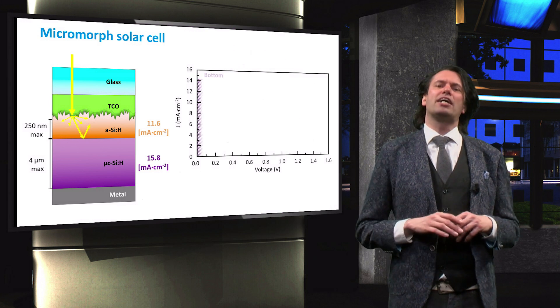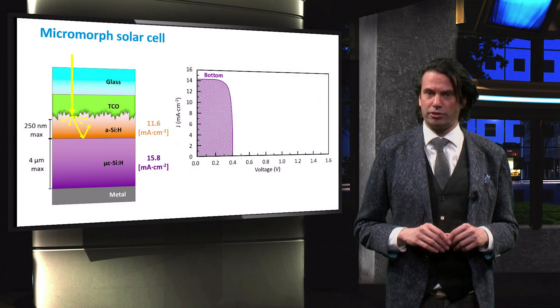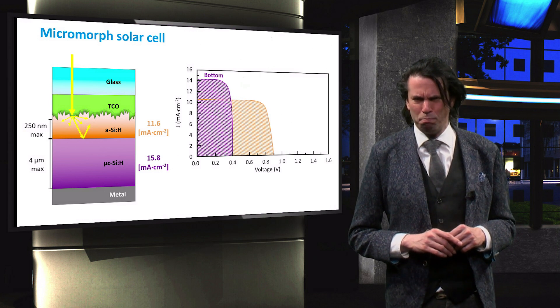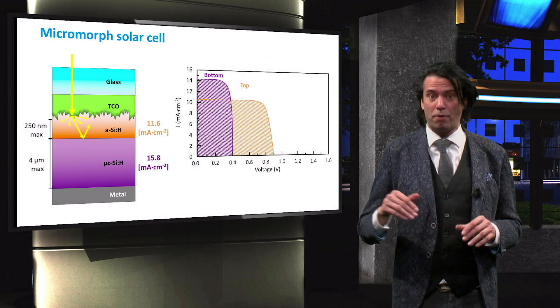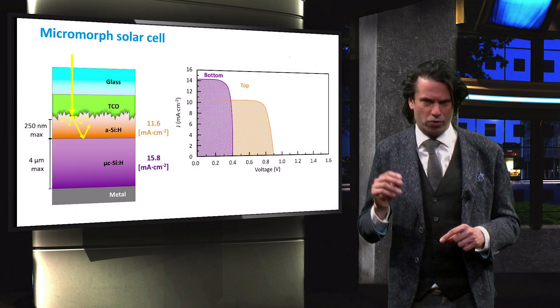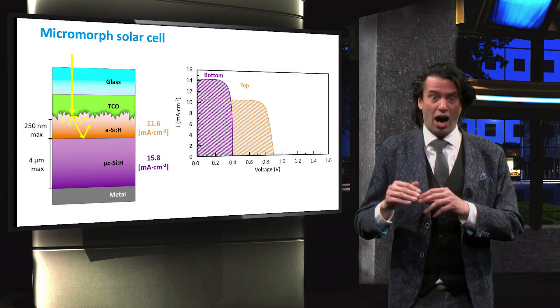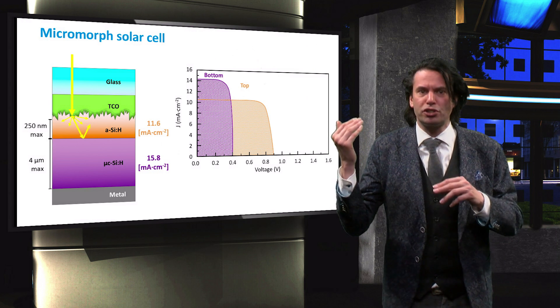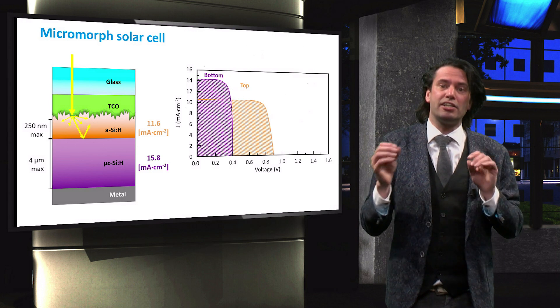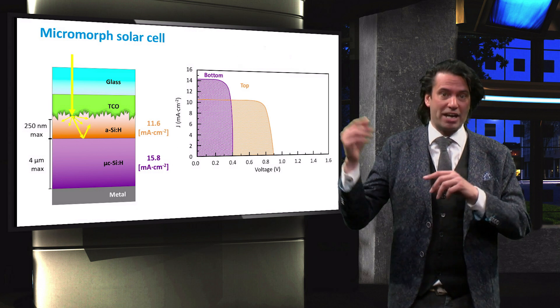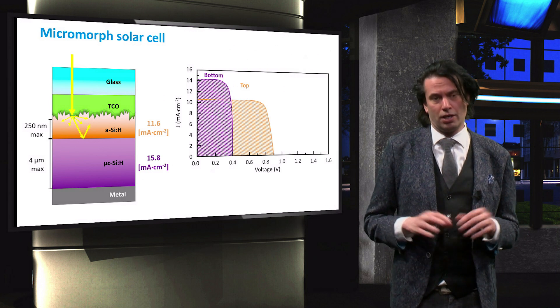This is visualized by the JV curves of the cells. The bottom microcrystalline cell has a much higher current at the maximum power point than the top amorphous cell. Reaching high efficiency with a multi-junction device requires each individual sub-cell to operate at the maximum power point.